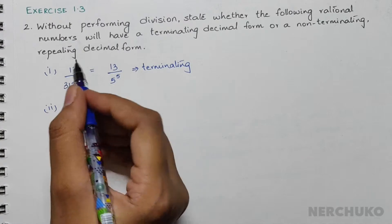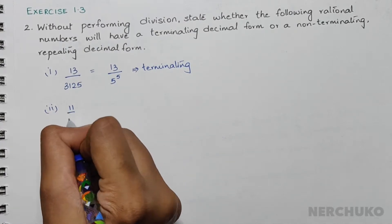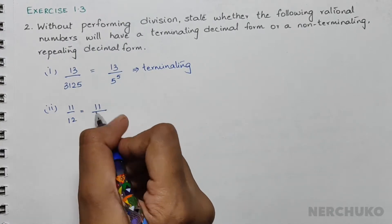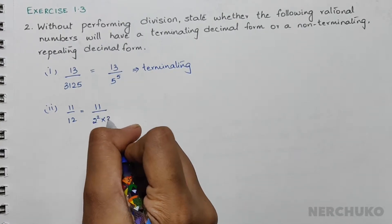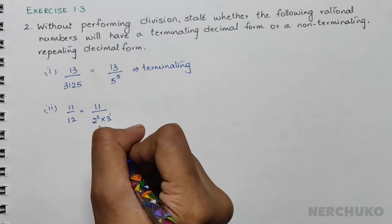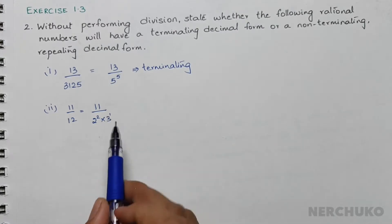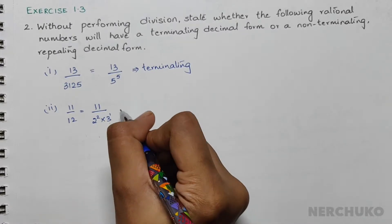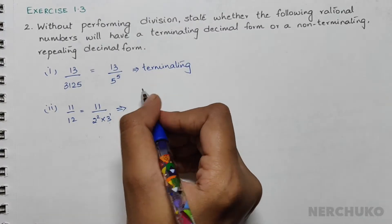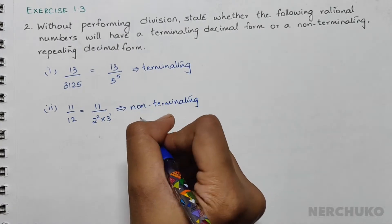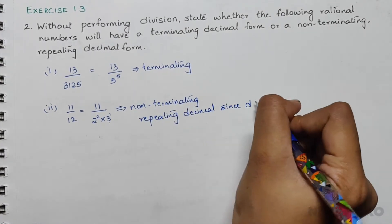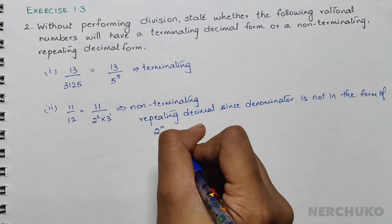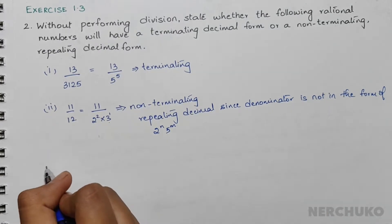For the second bit, we have 11 divided by 12. The prime factors of 12 are 2 squared into 3 to the power 1. Since the denominator has the prime factor 3, this will simply be a non-terminating repeating decimal, as the denominator is not in the form of 2^n × 5^m.